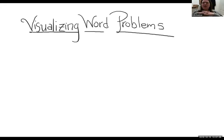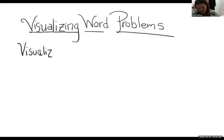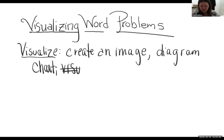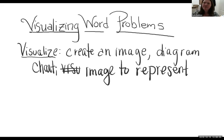Drawing a picture can often help us figure it out. We're going to look at a large variety of word problems today from all over math — some things you may have seen before, some you may not. The point today is just to practice drawing pictures to help us understand. To visualize means to create an image, diagram, or chart — some kind of visual representation — to better understand a word problem.